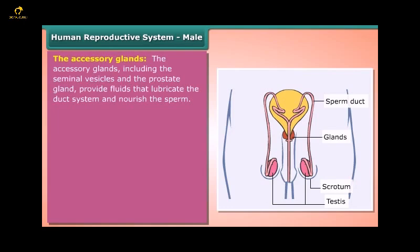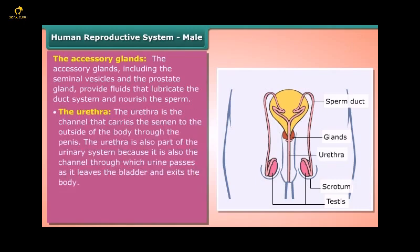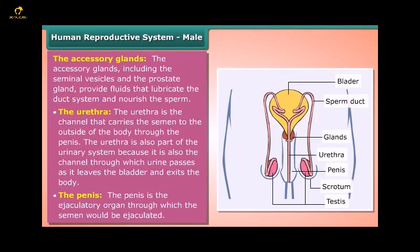The accessory glands, including the seminal vesicles and the prostate gland, provide fluids that lubricate the duct system and nourish the sperm. The urethra is the channel that carries semen to the outside of the body through the penis. It is also part of the urinary system, as it is the channel through which urine passes as it leaves the bladder. The penis is the ejaculatory organ through which semen is ejaculated.